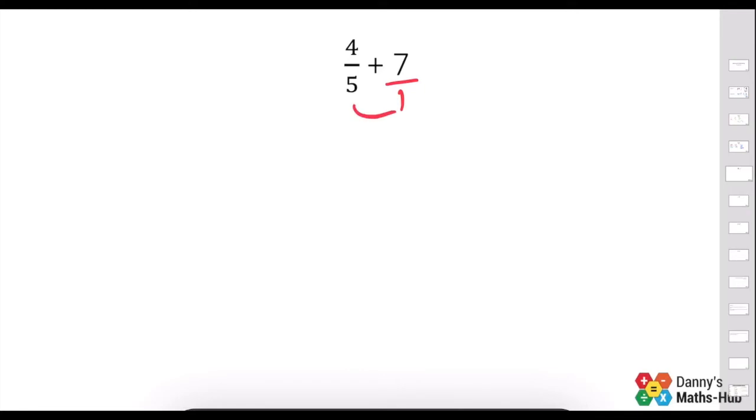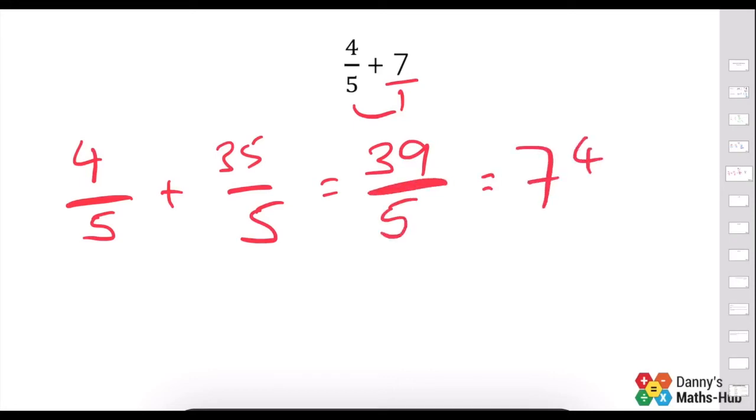So then if we complete this, 5 times 1 is 5, 1 times 4 is 4, and 5 times 7 is 35, which gives us 39 over 5. If we simplify that, we actually get 7 and 4 fifths.